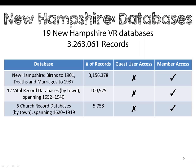We offer 19 vital record New Hampshire databases on AmericanAncestors.org, containing over 3 million records. This includes New Hampshire statewide births to the year 1901, marriages and deaths to the year 1937. There are also 12 vital record and 6 church record databases for specific New Hampshire towns.